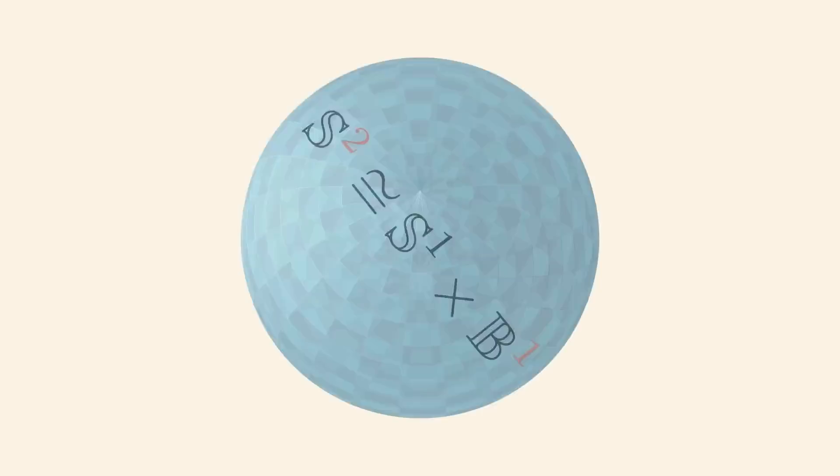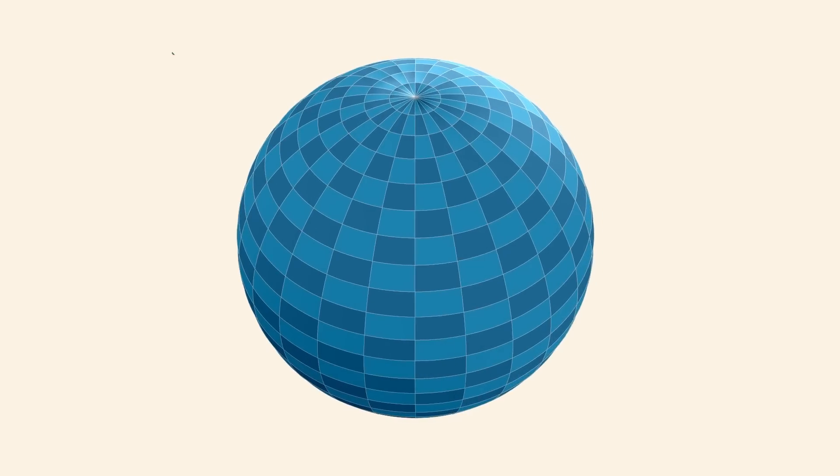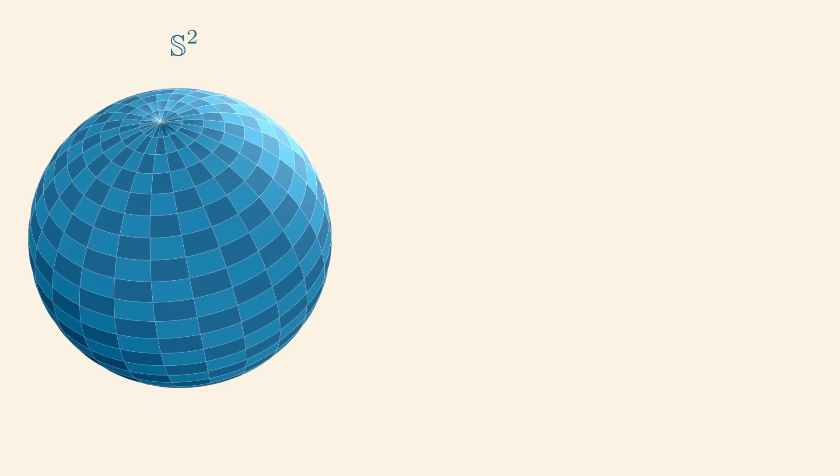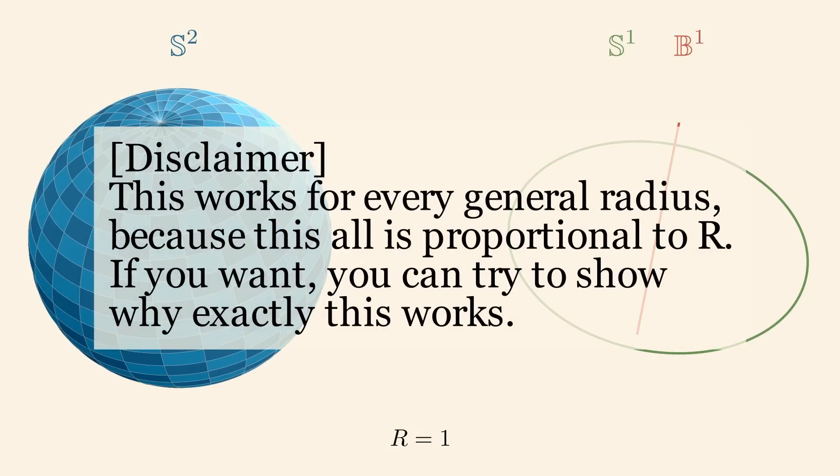Let's start with S2, the sphere embedded in 3D. This is now our left side. Now on the right, we have S1, so the circle boundary, and B1, which is the line. We'll only take a look at the specific case, in which the radius is 1.